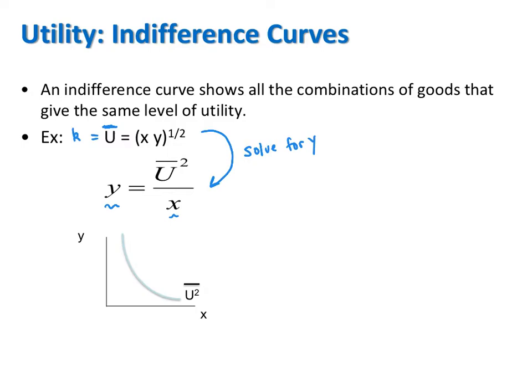To determine the slope or direction of this curve, we take the first derivative and evaluate its sign. The first derivative of y with respect to x gives us a minus u-bar squared over x squared. The fact that this is negative tells me that the indifference curve is downward sloping. As x gets bigger, y must get smaller, and that's because there has to be a trade-off when the goods are good goods.